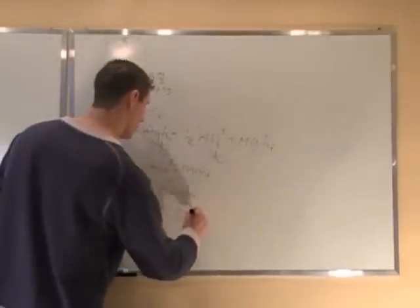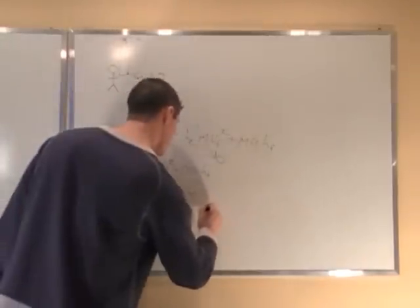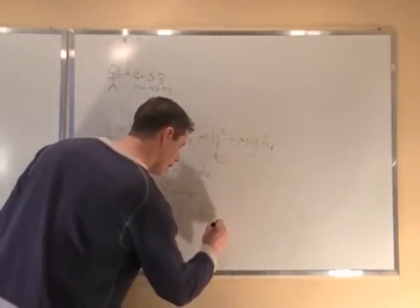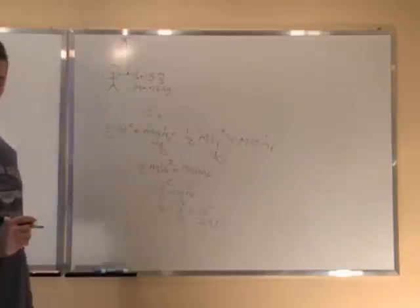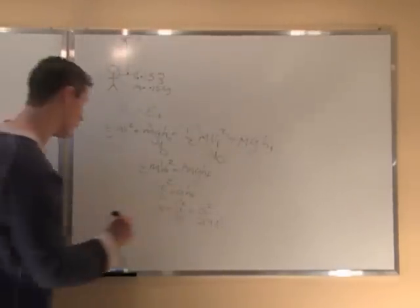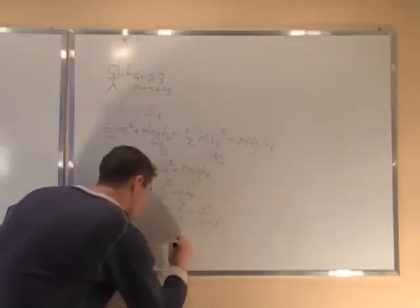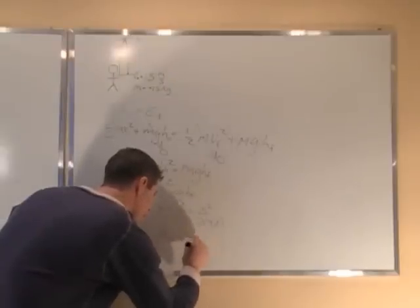So I'll plug in our numbers. V-naught is 15, so 15 squared over 2 times 9.8. Now we put that in our calculator, and we get a number of 11.5 m. So the final height, 11.5 m.